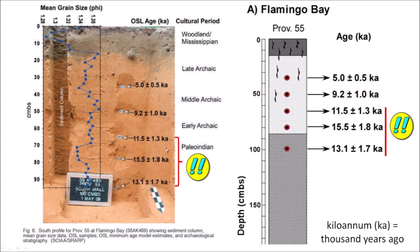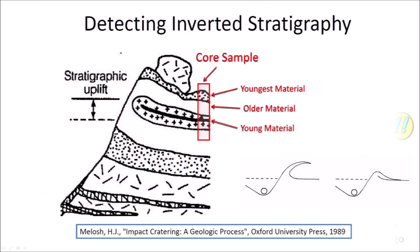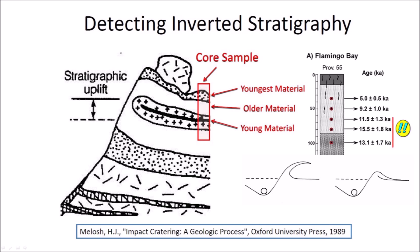Impact cratering displaces material laterally by horizontal compressive forces and ejects debris ballistically to produce stratigraphically uplifted rims around the cavity. Professor Jay Mellosh's book published in 1989 illustrates the inverted stratigraphy of a crater rim: a core sample shows the youngest material in the top layer, followed by older material excavated from a deeper layer, and going deeper still, the young material that was the surface of the terrain at the time of impact. This is exactly what was found in the rim of Flamingo Bay.